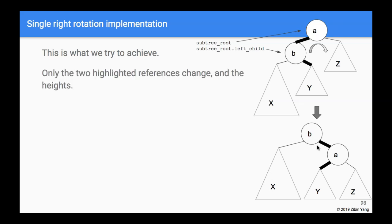One very important thing to realize is that this rotation really only changes two references. The first is the root's left child: it used to point to the left child, but now it's going to point to tree Y, which used to hang off as the right child of node B. The second reference we're changing is the right child of the root's left child: it used to point to Y, but now it points to the old root.